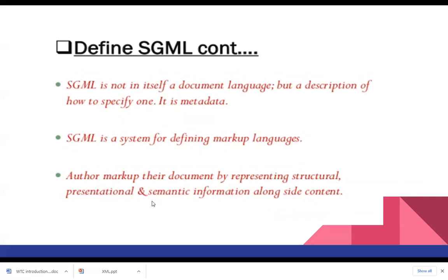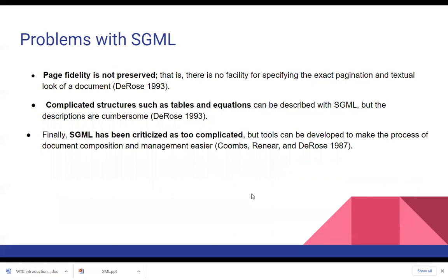SGML is used to define a markup language with the help of tags and meta language. However, the problems faced with SGML are: page fidelity is not preserved, and it has a very complicated structure. Page fidelity means — suppose you have a textbook with different page formats — SGML does not give accurate paging and accurate formats as specified by the tags.